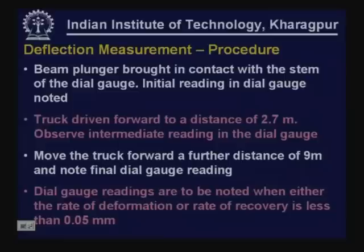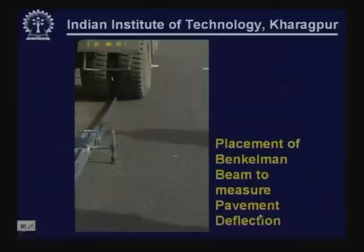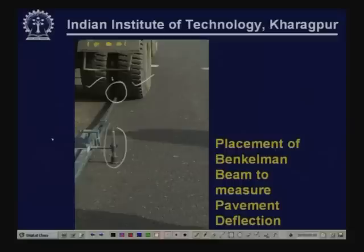The dial gauge readings are noted when the rate of deformation or rate of recovery is less than 0.025 millimeters. A photograph shows the dual wheel set with the probe point of the beam inserted between the two dual wheels, the two front legs visible, and the support frame of the beam.